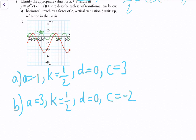Question 2: identify the appropriate values for a, k, c, and d to describe each set of transformations. For part a, we have a horizontal stretch by a factor of 2, a vertical translation 3 units up, and a reflection in the x-axis. A horizontal stretch by a factor of 2 means k equals 1 over 2, since we always use 1 over k. A vertical translation up 3 units means c equals positive 3. A reflection in the x-axis is a vertical reflection, so a equals negative 1. Since there's no horizontal translation, d stays equal to 0.